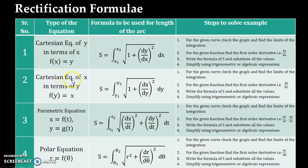And whenever you have this Cartesian equation for this particular form, then your rectification formula will be integration y1 to y2 under root 1 plus dx by dy whole square dy. The third equation is a parametric equation, so x and y will be given in terms of t.